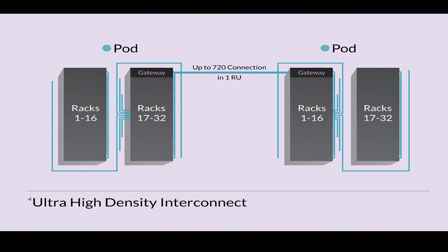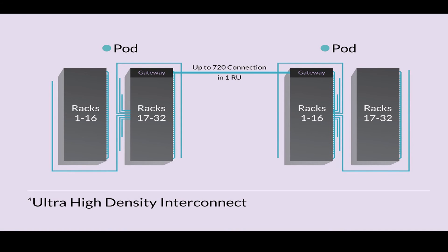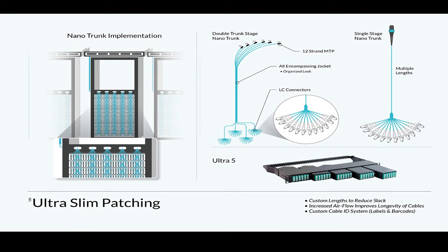In this top-of-the-rack configuration, we are introducing a solution with ultra-high-density technology and products. For example, between two gateways we are providing 720 bi-directional connections in a 1RU footprint. Reducing the volume of cabling is also crucial to allow better airflow and better organization of the environment. We are showing here some of the key products, which can all be tailor-made directly in our factory per customer projects.